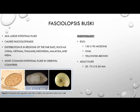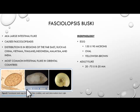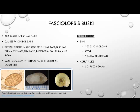The egg measures 150 by 90 microns. It is oval in shape and has a yellowish-brown appearance, as seen in the bottom left image. The adult fluke ranges from 20 to 75 millimeters in length by 8 to 22 millimeters in width. The bottom right image shows the first intermediate snail host, which kicks off the life cycle of Fasciolopsis buski.